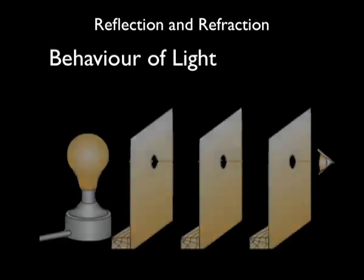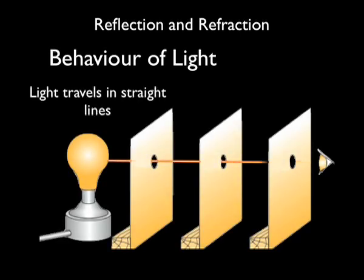Behaviour of light. Light travels in straight lines from its source. The behaviour of light is observed by a measuring instrument or our eyes.